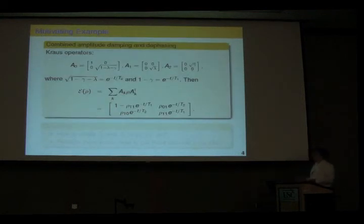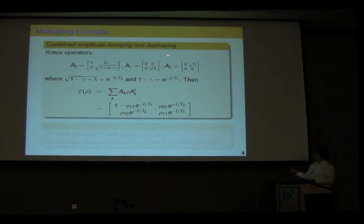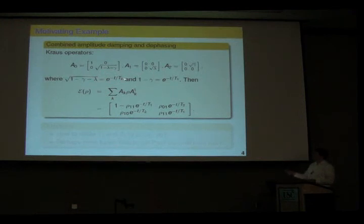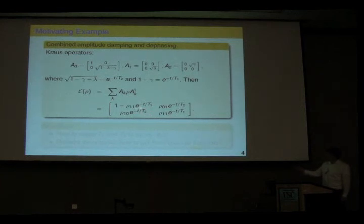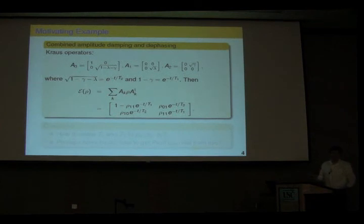As a motivating example, let's look at a channel with Kraus operators having an amplitude damping component and a dephasing component. The parameters T1 and T2 show up in the definition of these Kraus operators. If you apply this channel to a state on one qubit, the off-diagonal terms start to die off on a timescale of order T2, making the state classical. On a timescale of order T1, you will have completely lost information about your system and would be in the ground state.